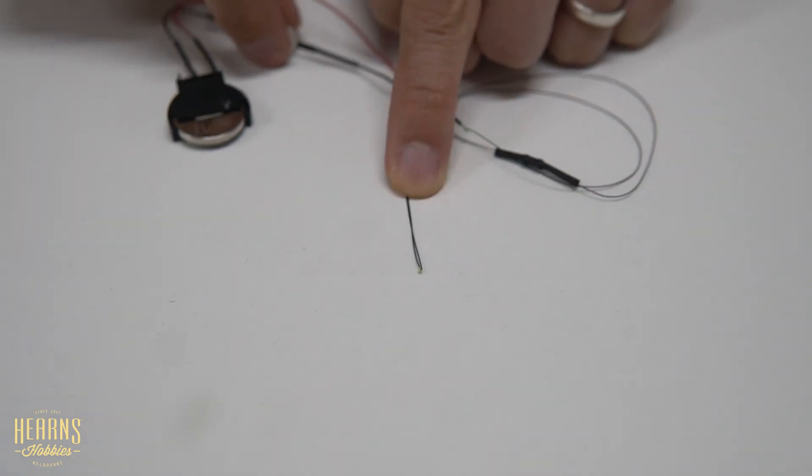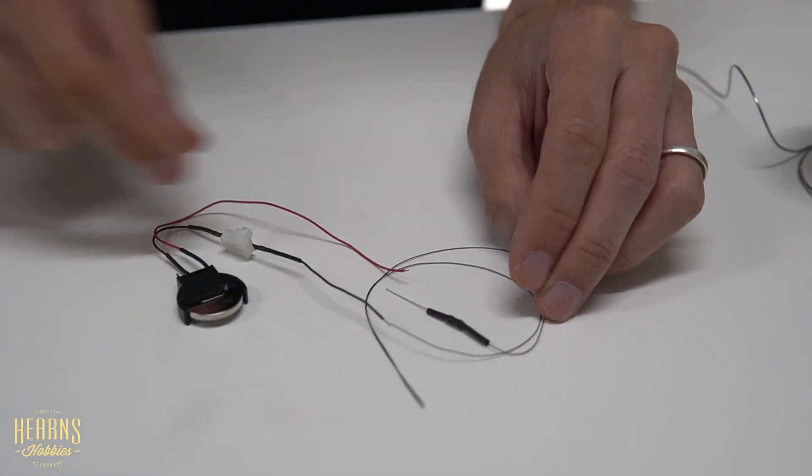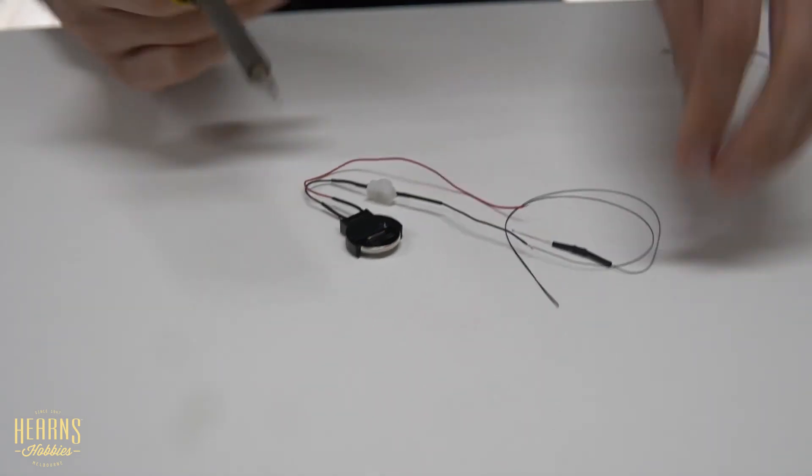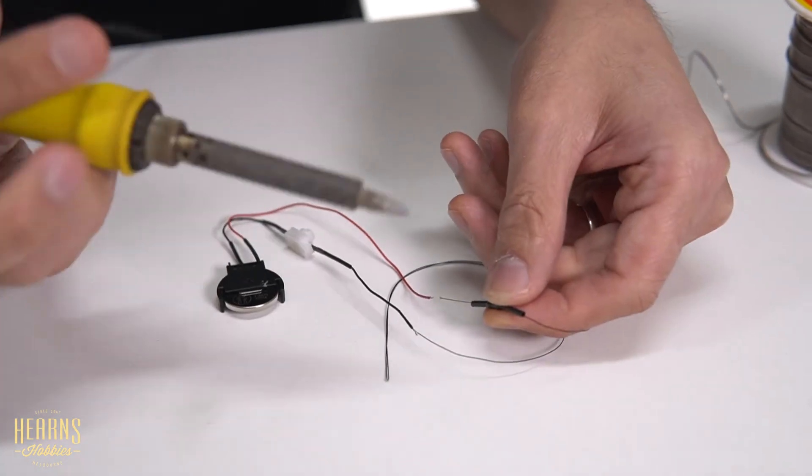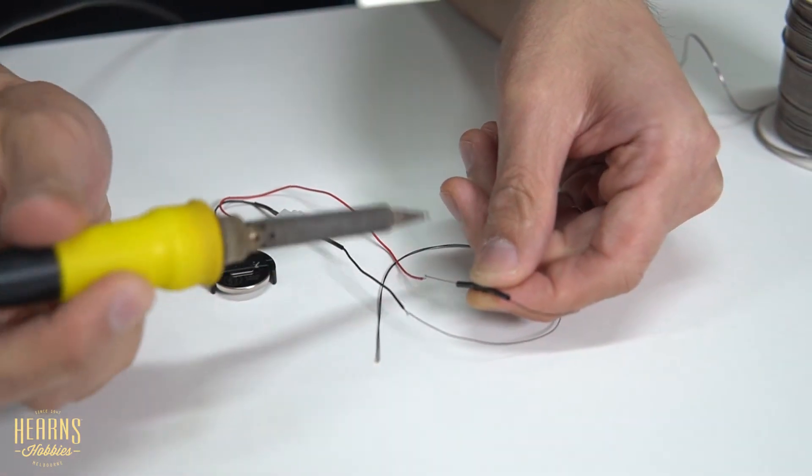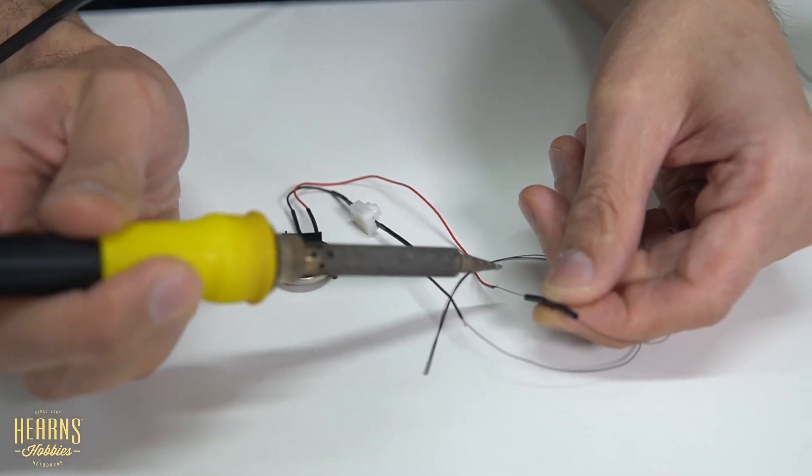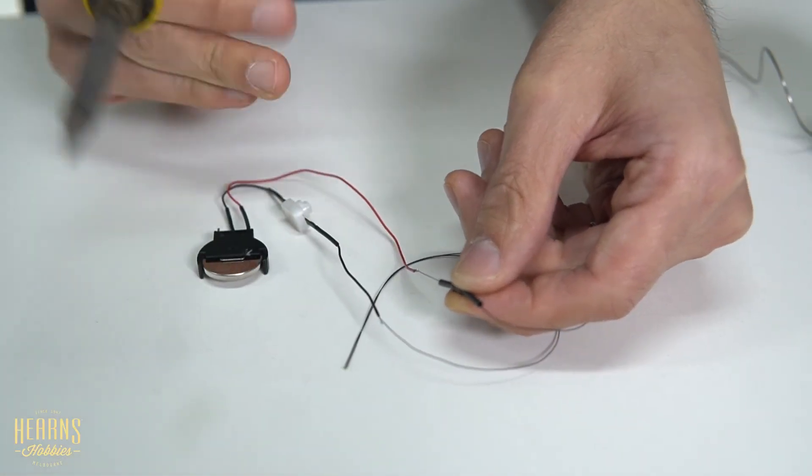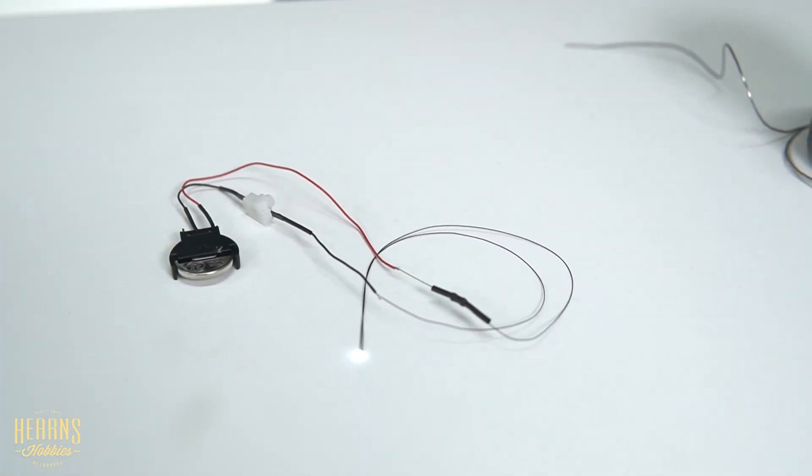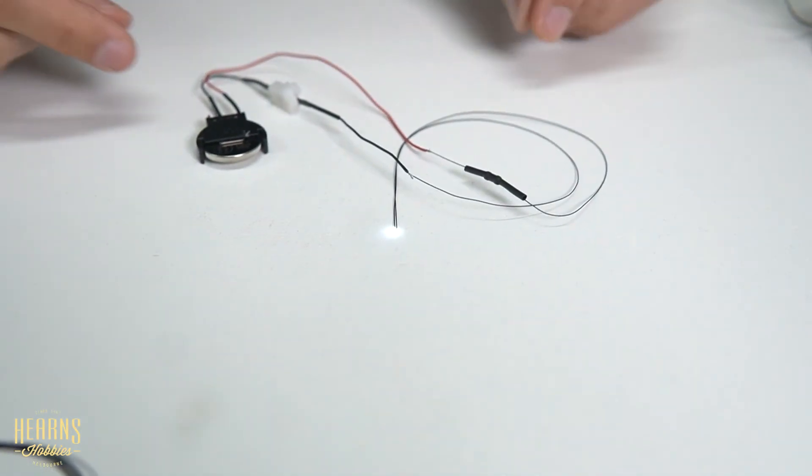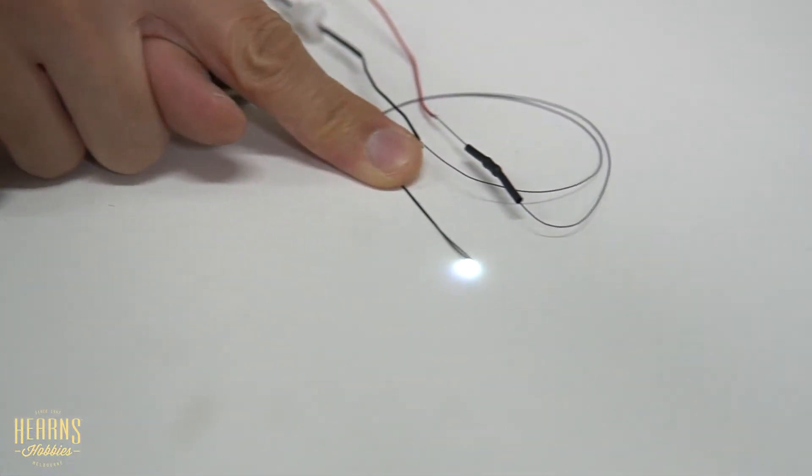Then obviously press that again. Oh, that wasn't too clever, was it? That's not soldered on too well. That's easy enough to fix. But you've got the basic gist of it anyway. Let's just make this more permanent. Fine wires can be a bit tricky. I'll try that again. There you go.